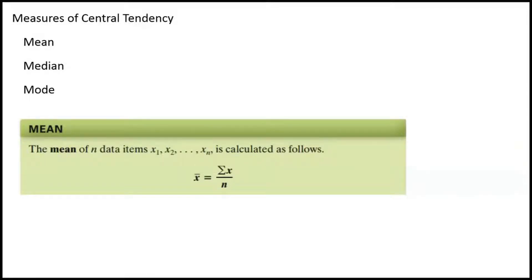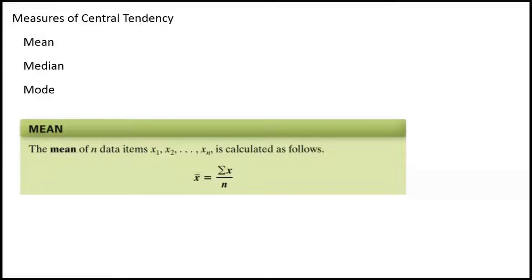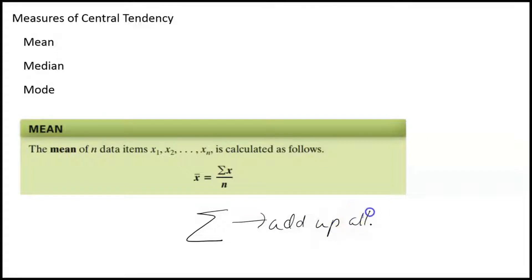The mean of n data items — x1, x2, x3, x4, x5, all the way to the last one — is calculated as x-bar, which is x with a line over the top of it. This symbol is a summation symbol — a Greek capital sigma letter — and in math it's used to add up a bunch of terms. So we're going to add up all the x's and then divide by n, which is how many items you have.